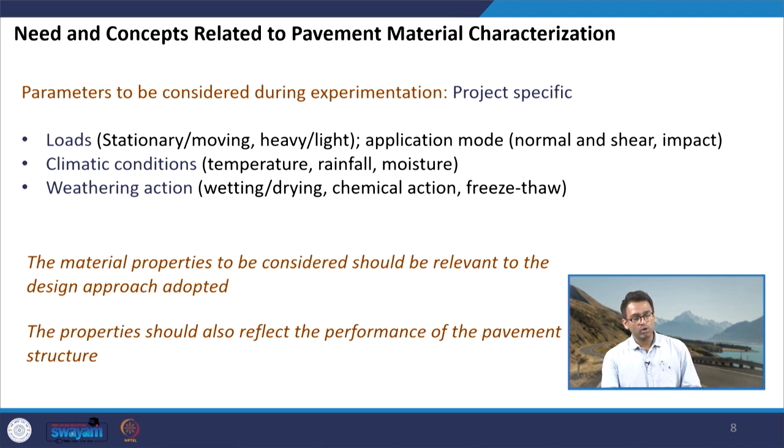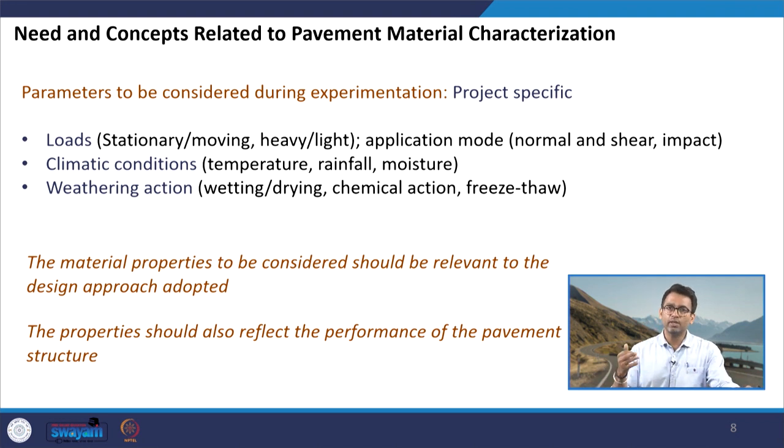These properties should also reflect the pavement performance — mostly indicating the critical failure mode and the type of distresses occurring. If it is a flexible pavement with fatigue cracking, I should know which parameters or properties of different layers are related to this fatigue cracking, and test those parameters in the laboratory. Our target properties should be chosen such that they are related to the critical distresses that occur in the field.